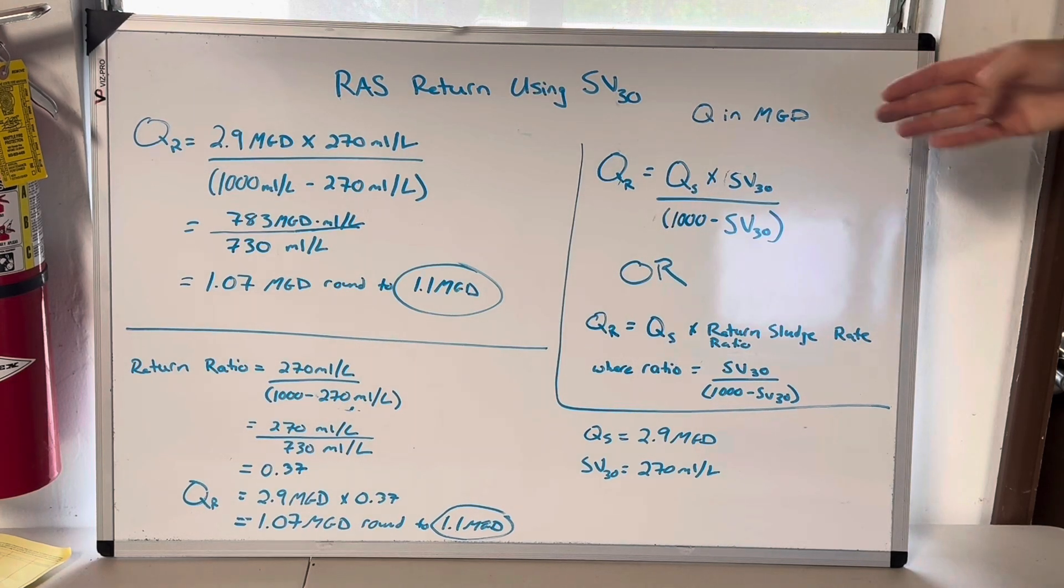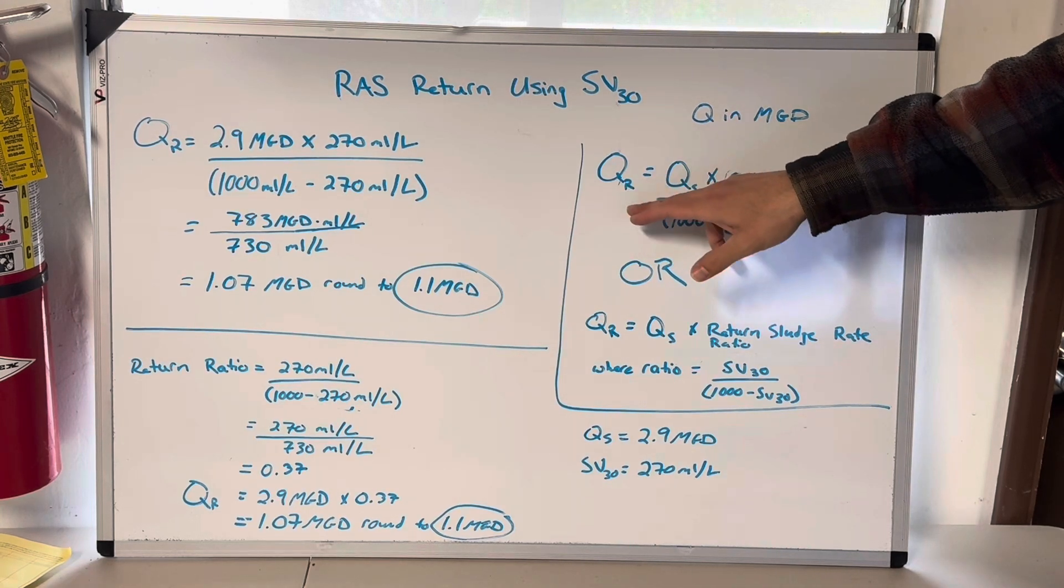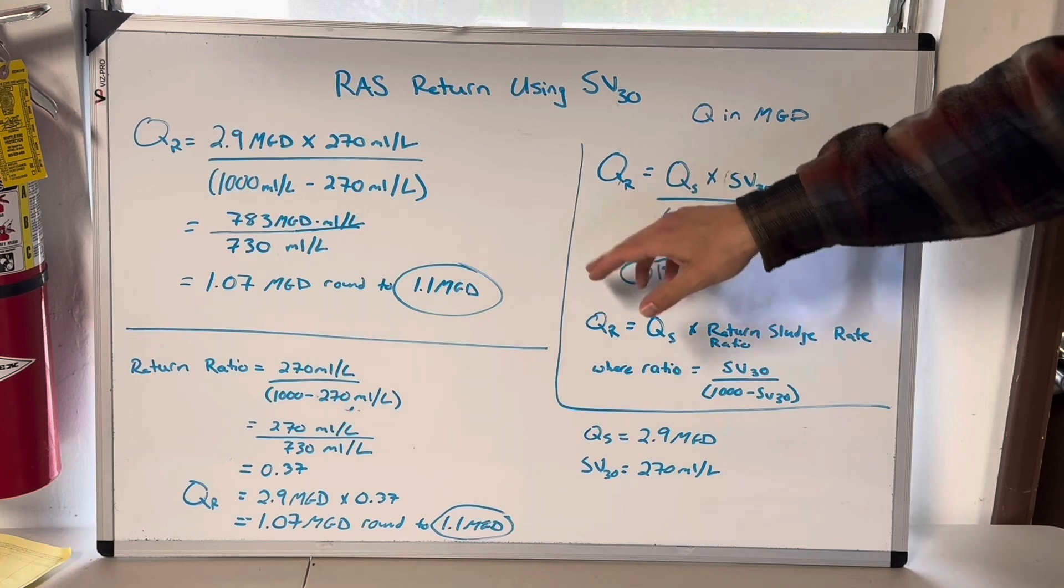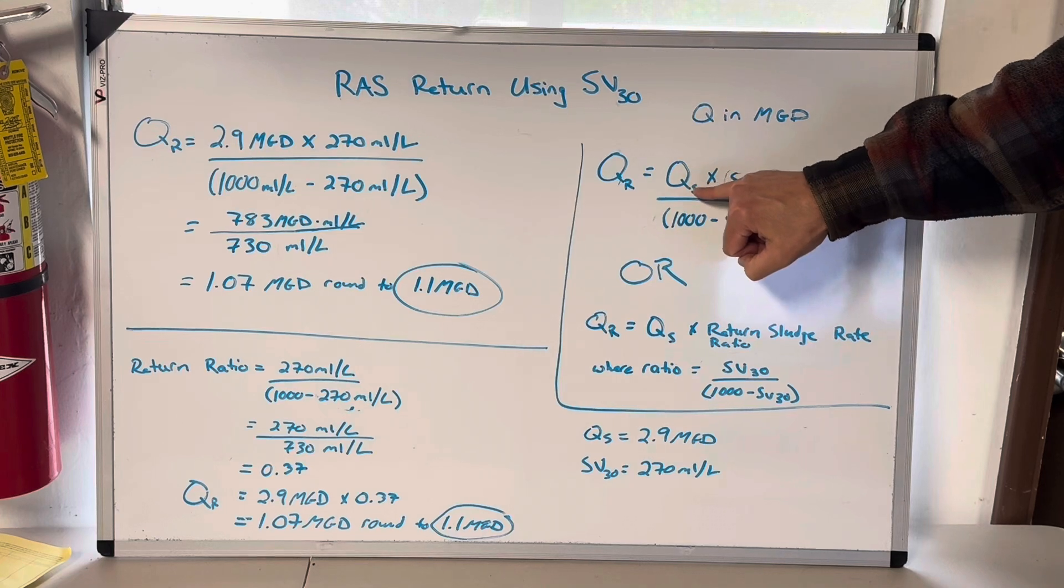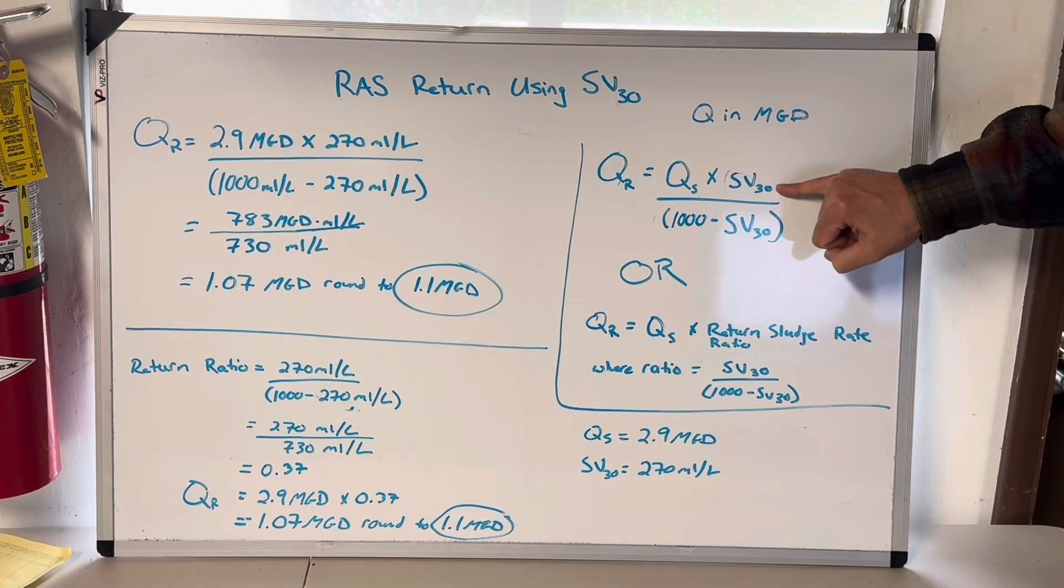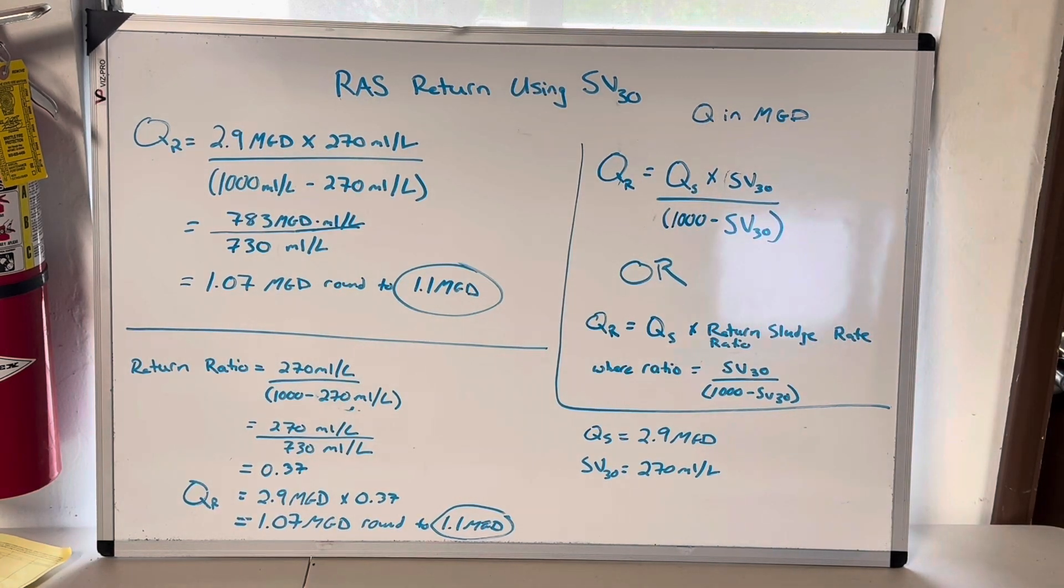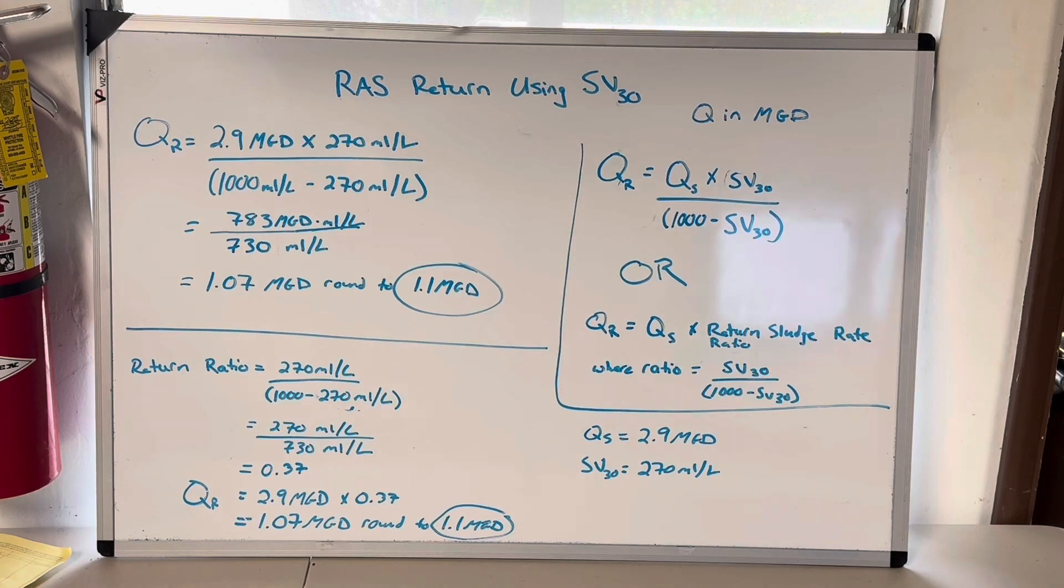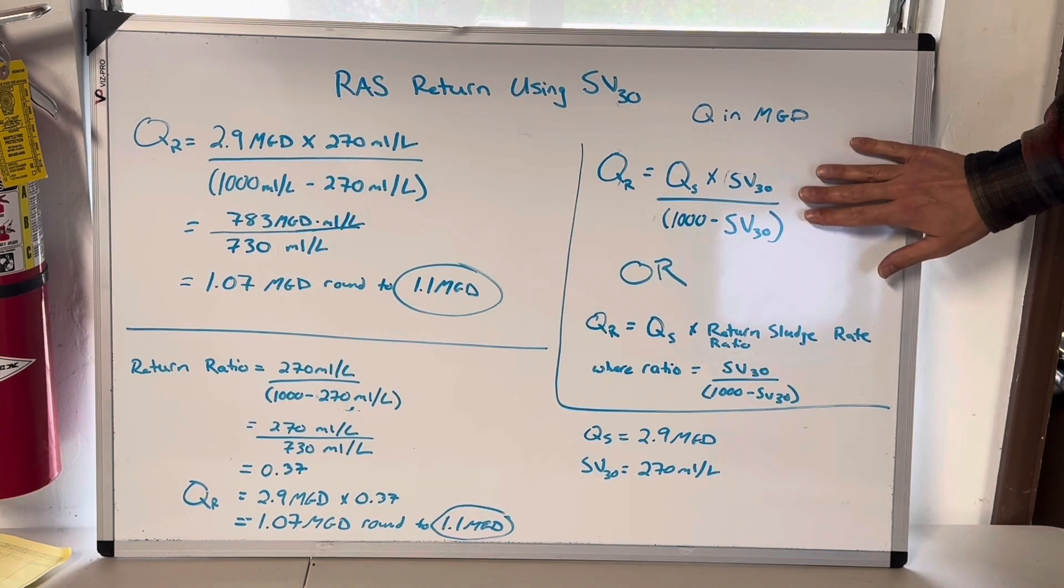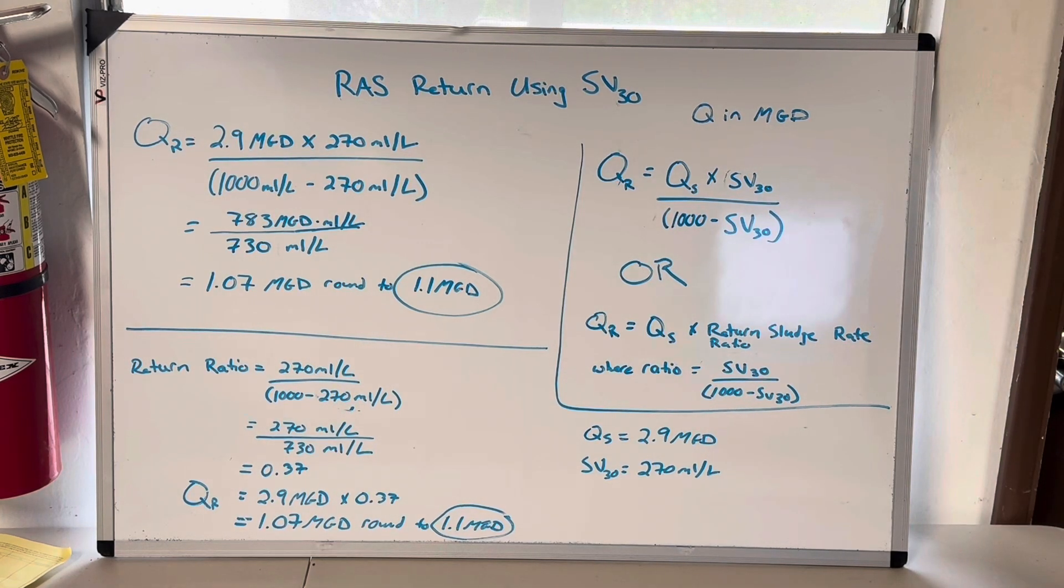So there's two different equations to do this. This might be written QR. Your flow, your return rate in MGD, Q is in MGD, equals your secondary influent flow in MGD times your SV30 number divided by 1000 minus SV30. What's 1000? Remember, it's a one liter sample. And this is a ratio right here. And that's why I think this one's a little better for understanding exactly what we're doing. But if you're the type of person that just needs to know an equation, this is probably a little faster than doing it like this. But both of them are fairly straightforward and easy.